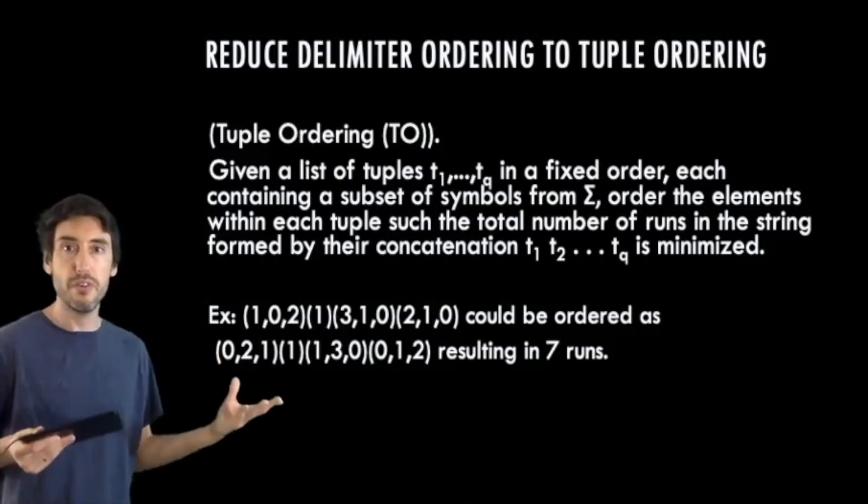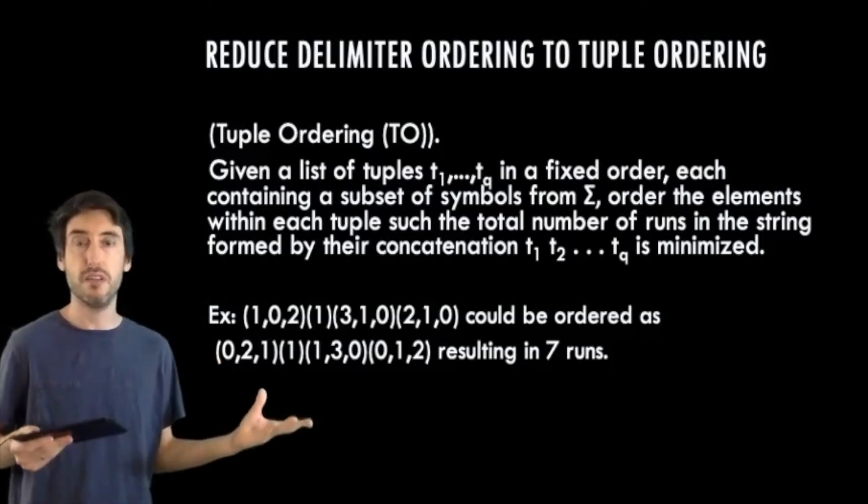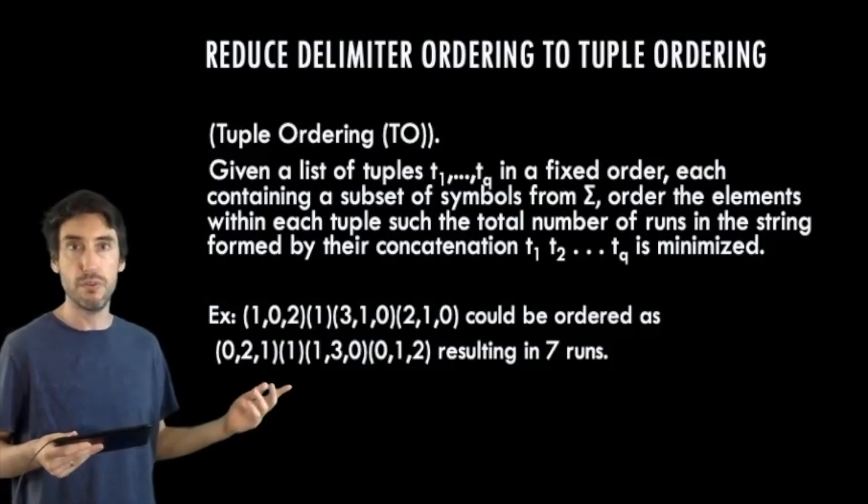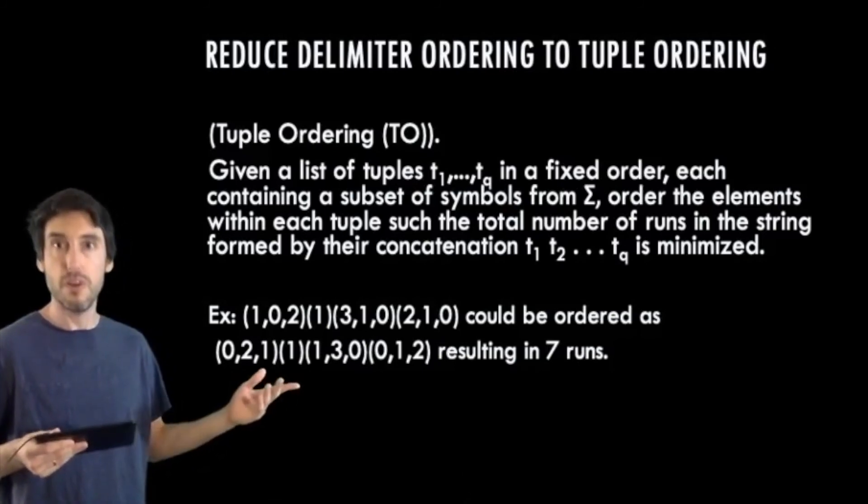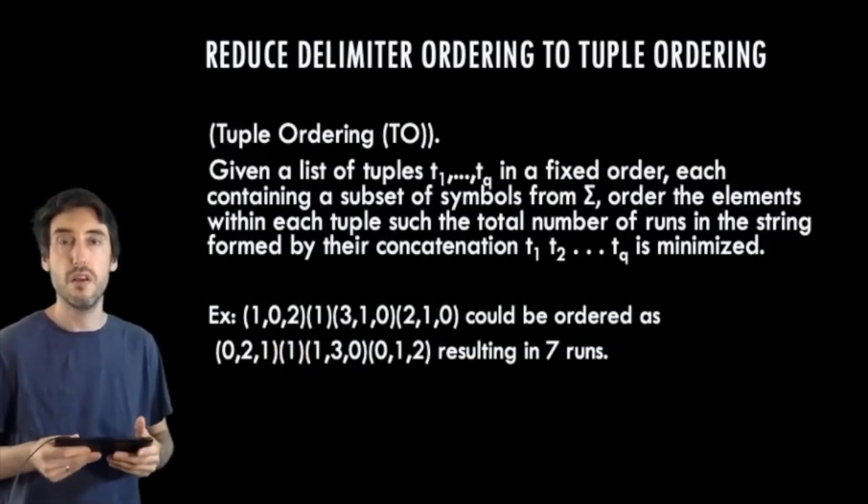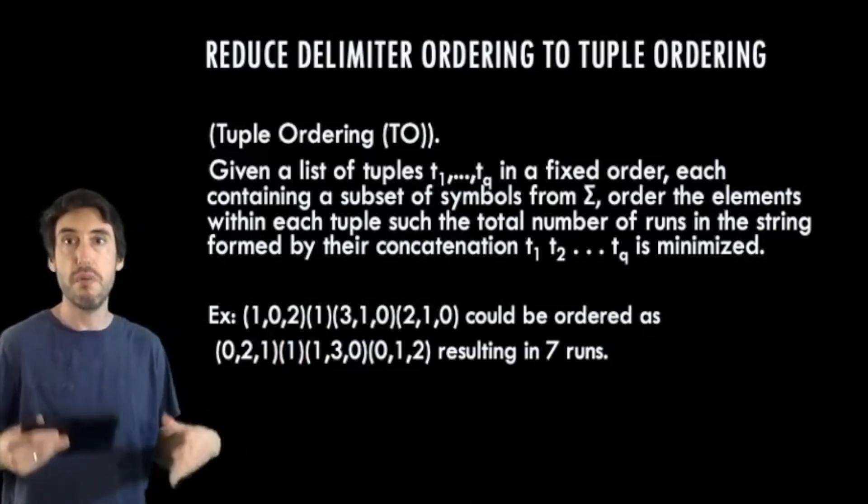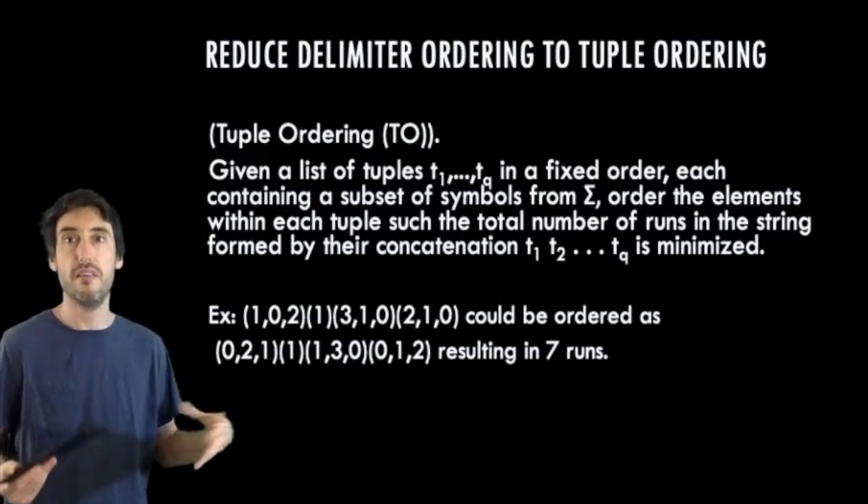So the key idea here is that the tuple order is fixed, but the ordering within each tuple can be changed. So a small example is given here, where we reorder the symbols to make the resulting string, not including the braces, have seven runs. And they start at 0, 2, 3, or 0, 2, 1, 3, 0, 1, 2. So it's easy to see that the only symbols which really matter are those being placed at the far end of the tuple.